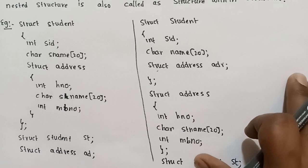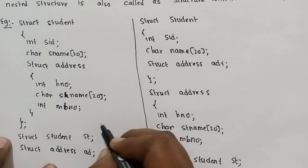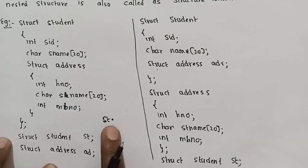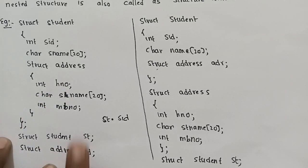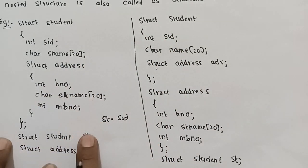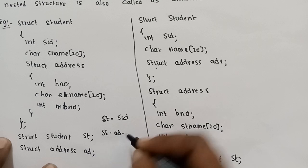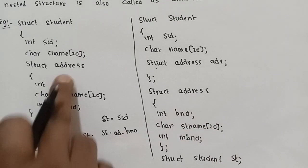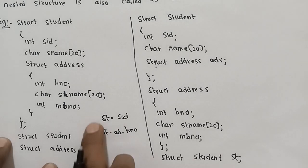You can access the structure members using the dot operator. For the outer structure variable 'st', you access members like st.name. To access the inner structure members, you use the outer structure variable followed by dot and the inner structure variable, such as st.ad, to access the nested structure members.